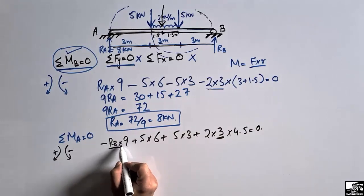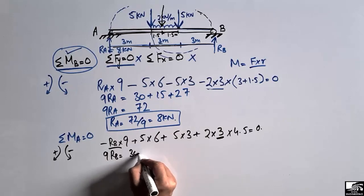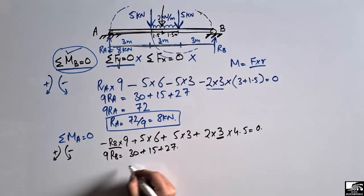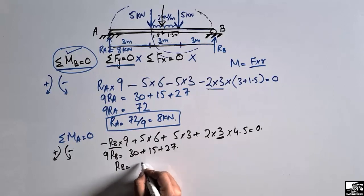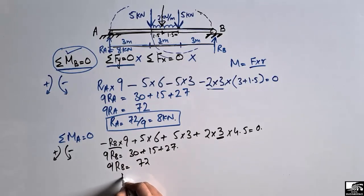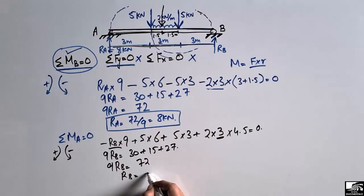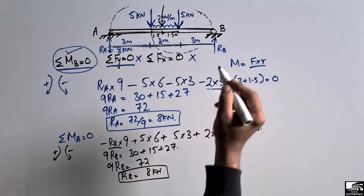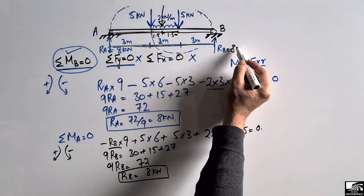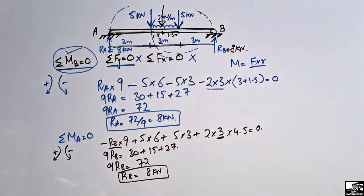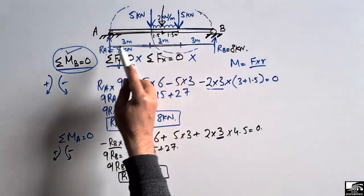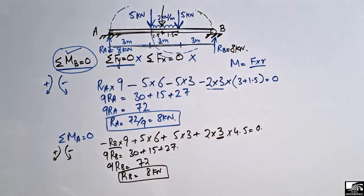Solving: 9·Rb = 30 + 15 + 27 = 72, so Rb = 72 ÷ 9 = 8 kN. Rb is also 8 kN, equal to Ra. This makes sense because the loading is symmetric about the beam's center.